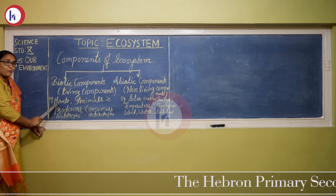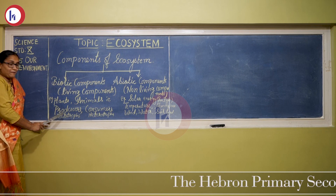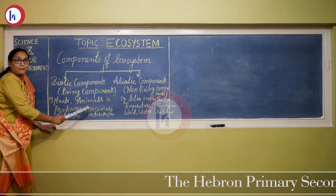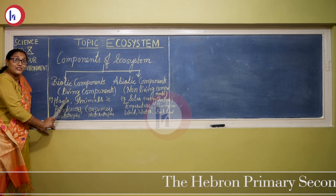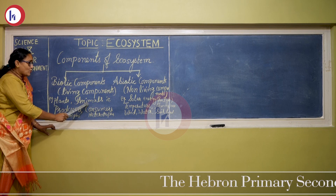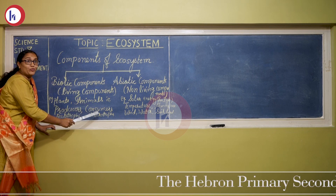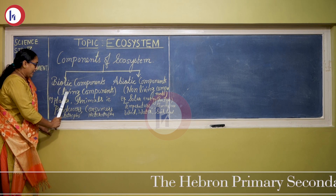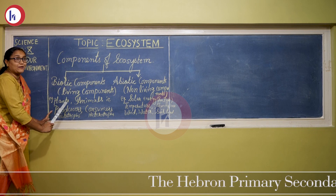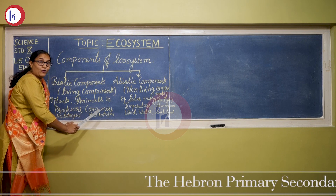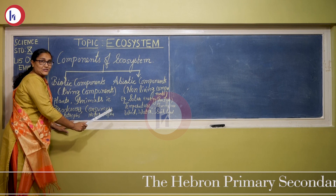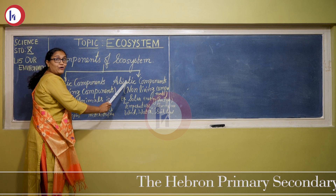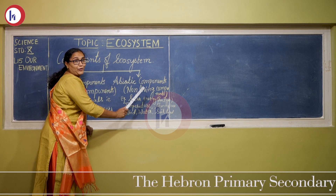In higher classes, plants are called producers or autotrophs because they prepare their own food. Animals are called consumers or heterotrophs because they consume food made by producers. So biotic components are all living components.